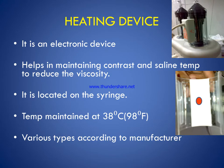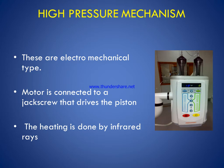The heating device is a thermostat device located behind the syringe. It is an electronic device which helps maintain contrast and saline temperature to reduce viscosity. It is located on the syringe and maintains a temperature of 38 degrees Celsius or 98 degrees Fahrenheit, varying according to the manufacturer. The high pressure mechanism is electromechanical: a motor is connected to a jack screw that drives the piston, and heating is done by infrared rays.